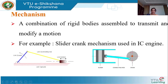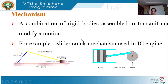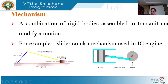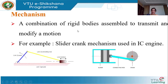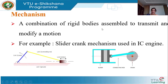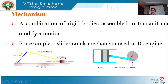A mechanism is a combination of rigid bodies assembled to transmit and modify a motion. A rigid body means there is no deformation — distortion is zero. This mechanism is made up of a number of rigid bodies assembled in such a way as to transmit and modify motion.